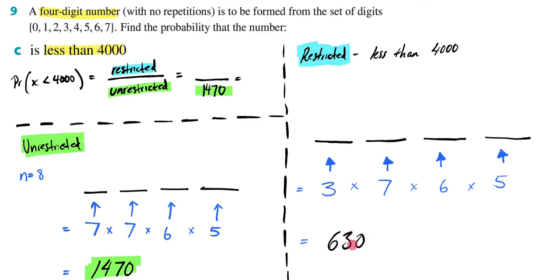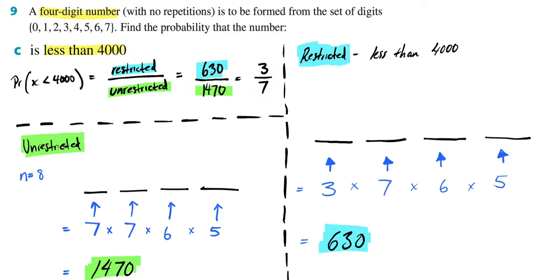That is my restricted value — 630. I highlight it in blue, and write 630 over 1470, which gives us 3 over 7. Three on seven — and that is your answer. Hopefully you were able to get that. That one is not too hard.